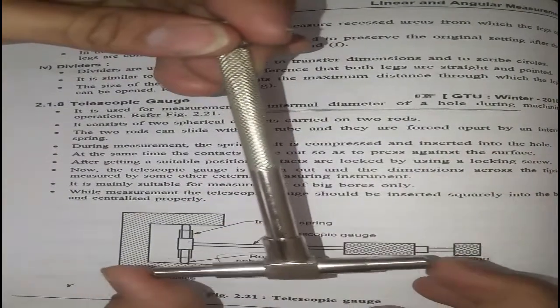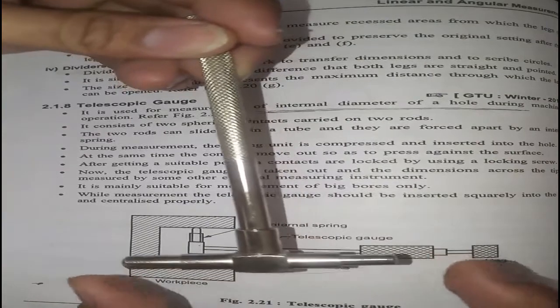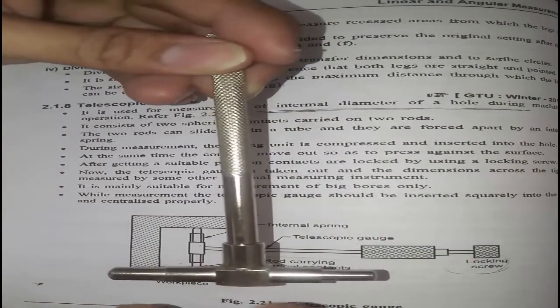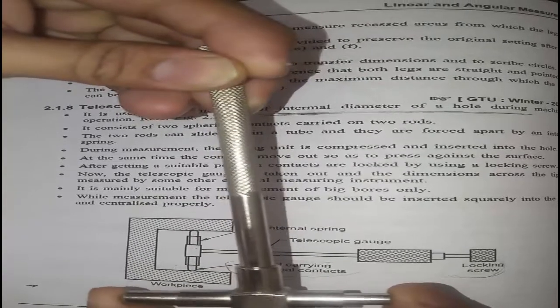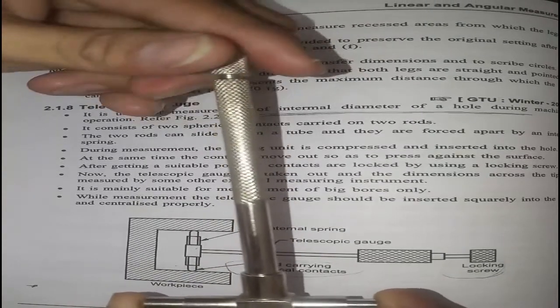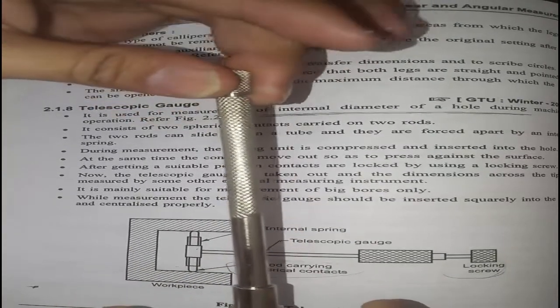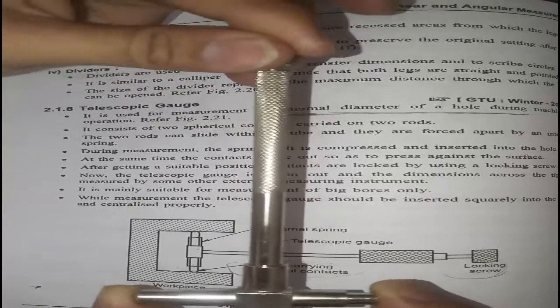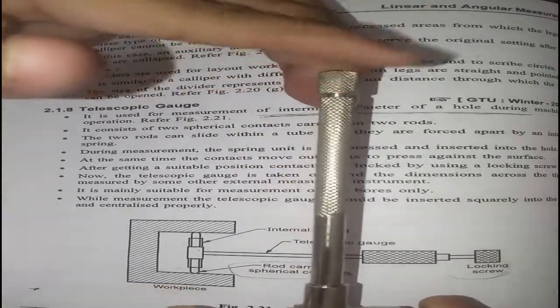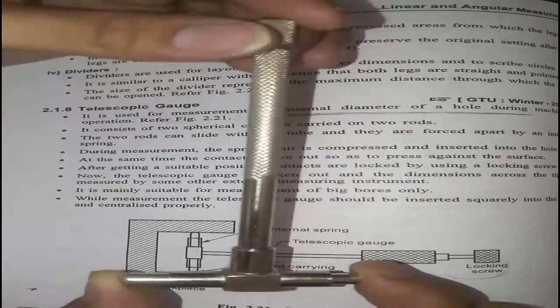After inserting this gauge into the cylinder, it will expand like this. Now you lock the telescopic gauge from here.